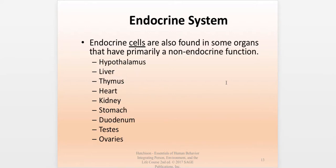Some organs in the body also have endocrine cells that function as an endocrine gland, though they're in an organ that doesn't primarily have an endocrine function. These include testes and ovaries, which are listed in the chapter. Some references classify the testes and ovaries as glands, while others consider them organs with endocrine cells — the textbook authors seem uncertain how to classify them as well.